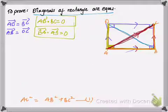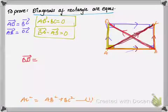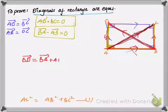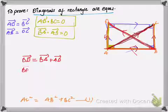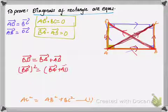Similarly, I'll take the other diagonal BD. Moving from point B to D is the same as moving from point B to A and then A to D, so I can write BD = BA + AD. Again I'll square both sides, so squaring both sides we have BD² = (BA + AD)².